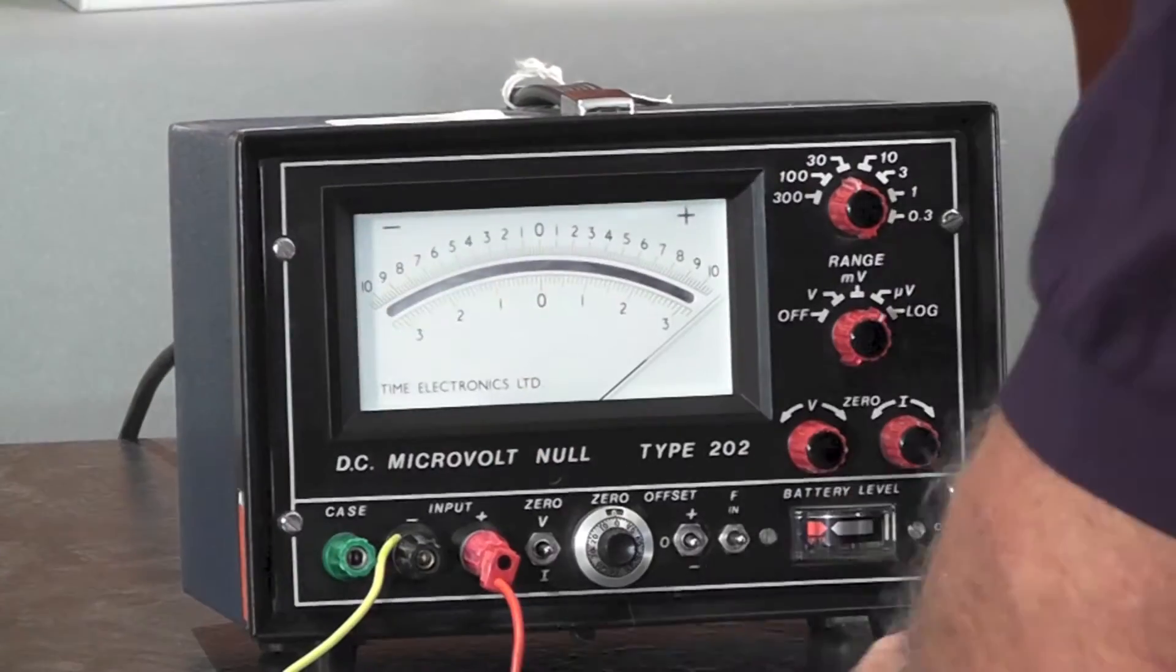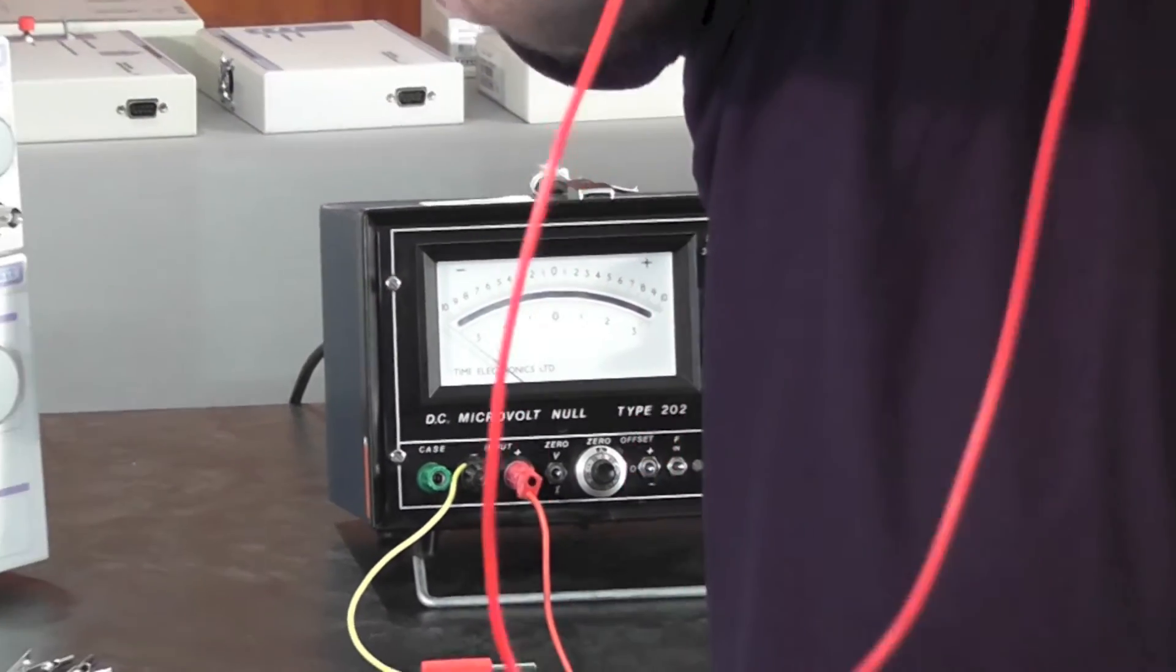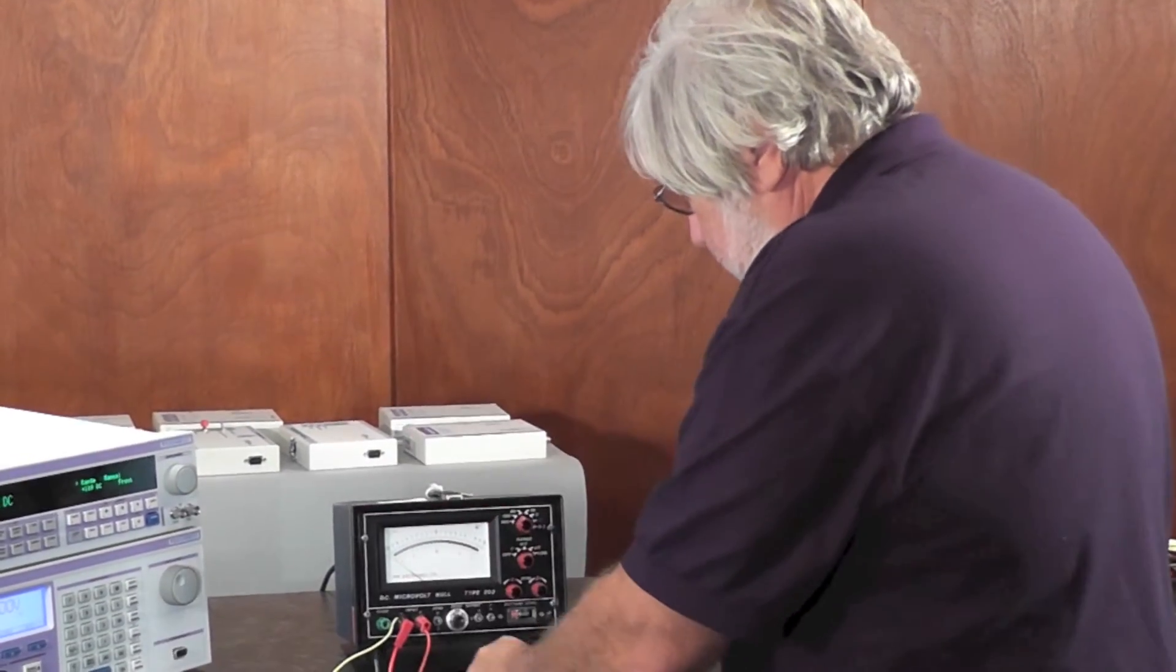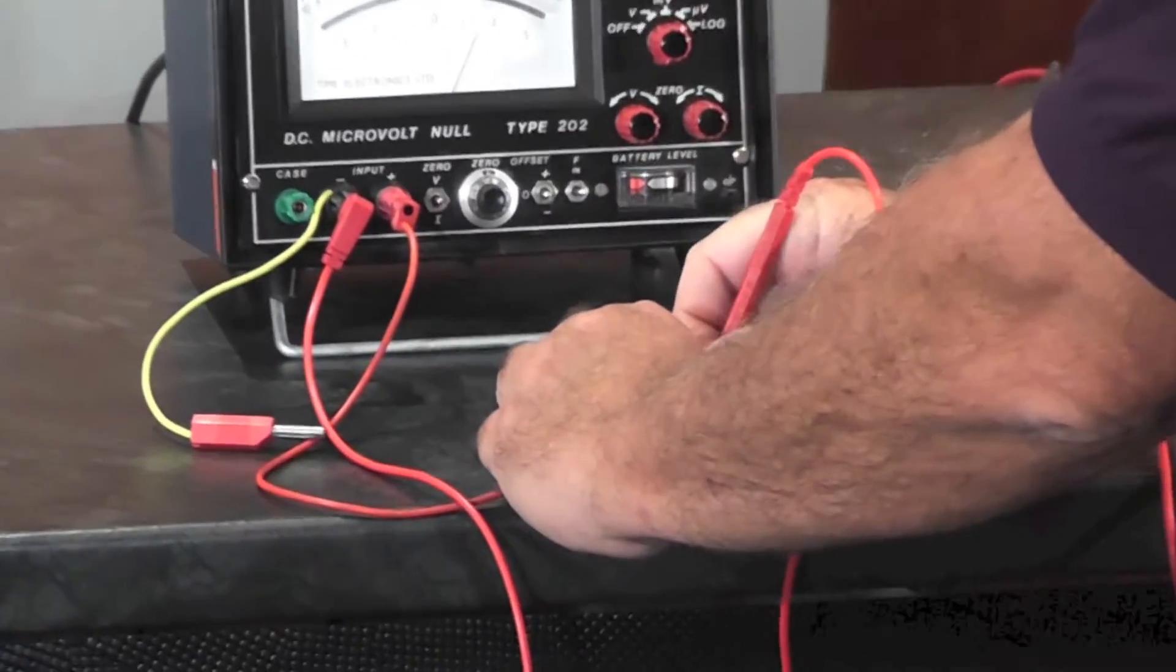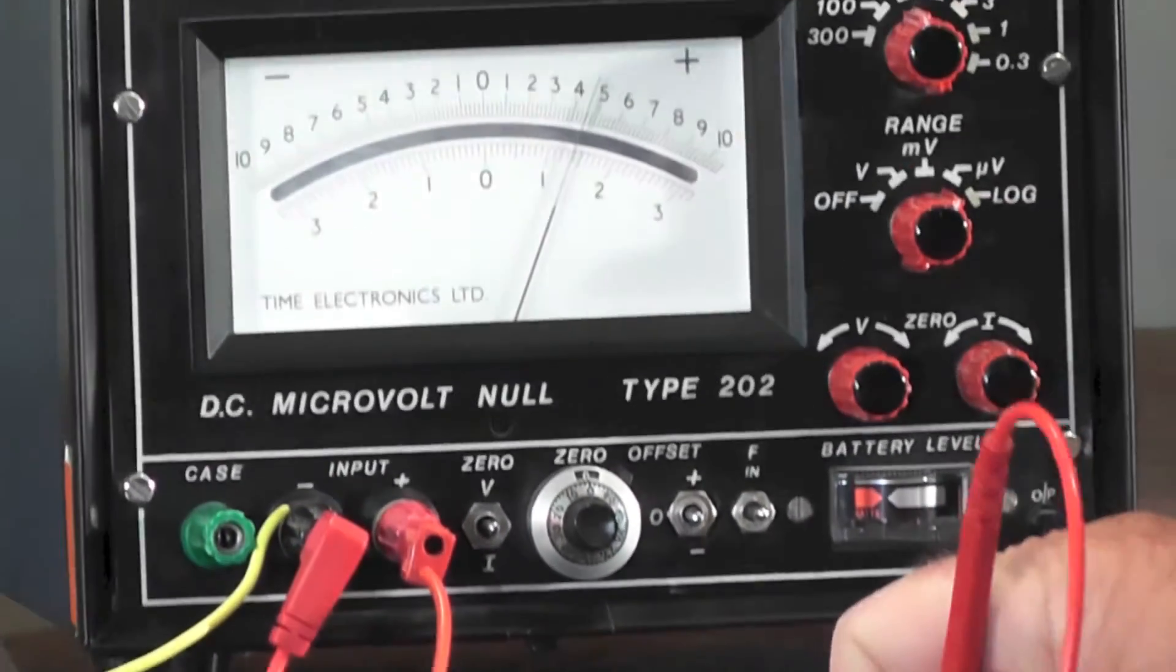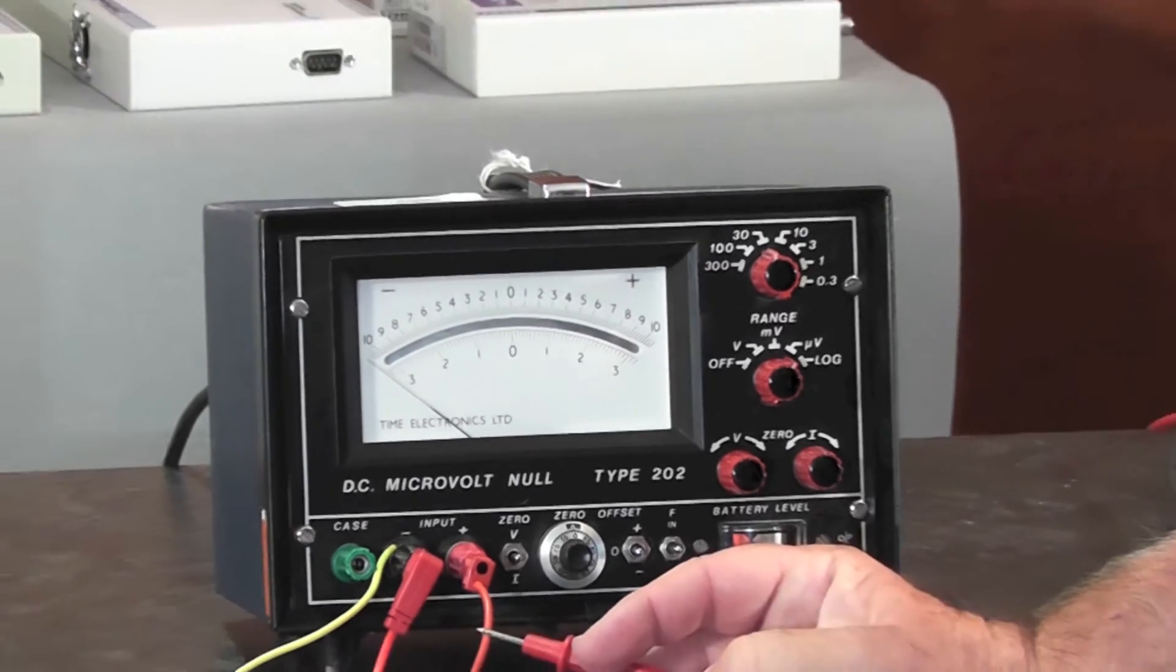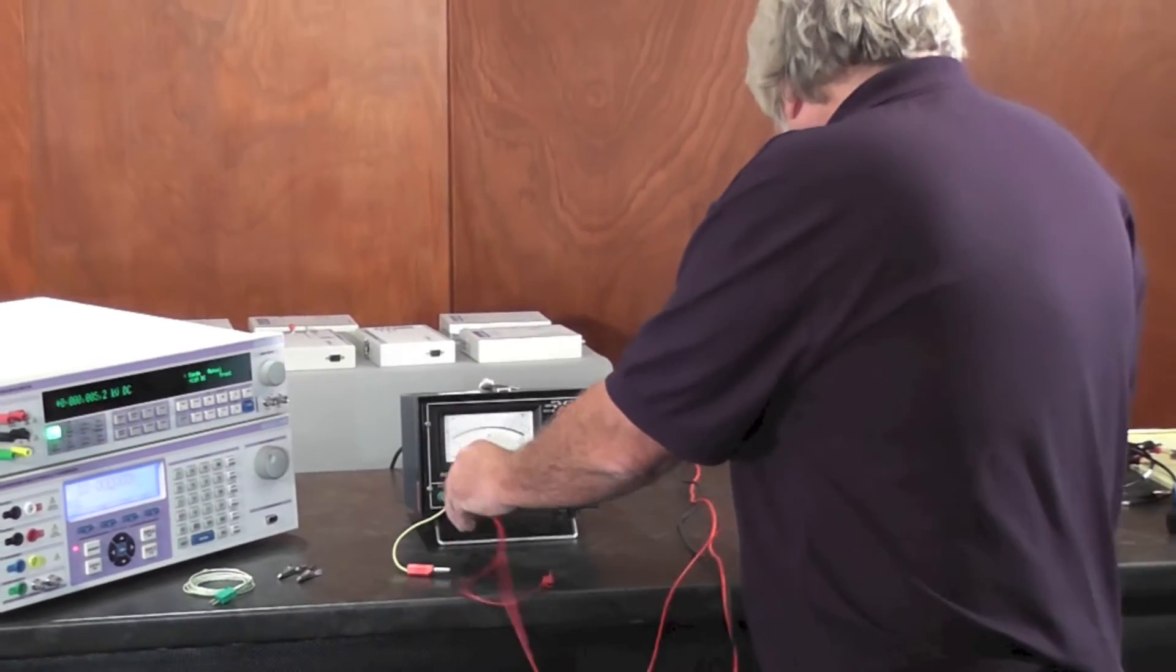If we use one of the typical silver plated connections on a typical test probe and I go in here, again just making a short, you can see 15 to 20 microvolts of voltage. Now if this was at the one volt level, that would be representing 20 to 30 ppm worth of error just because you've used the wrong test leads.